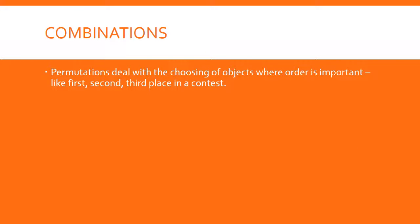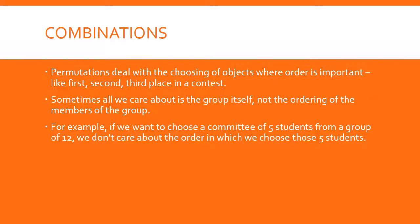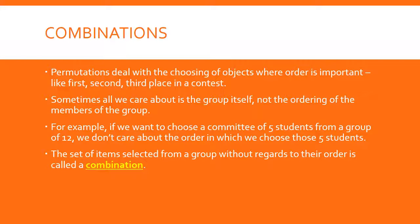Permutations deal with choosing objects when order is important. Combinations, on the other hand, do not consider order. Sometimes all we care about is the group itself — we don't care about the ordering of members. For example, if we want to choose a committee of five students from a group of 12, it doesn't matter which one is first, second, third, fourth, or fifth. You're not ranking them or electing president and vice president — you're just forming a committee, so order is not important. This is called a combination.